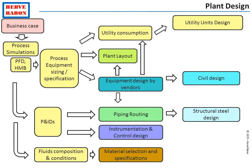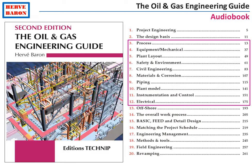That's it. This is, in a nutshell, the sequence of work between disciplines — each represented by a different color — for the design of a plant. This introduction is now concluded. In the coming chapters, we will go through each of the engineering disciplines and explain the work and the deliverables it produces.